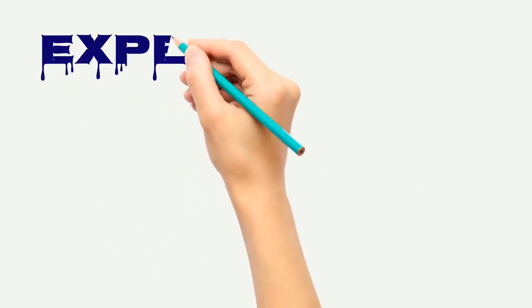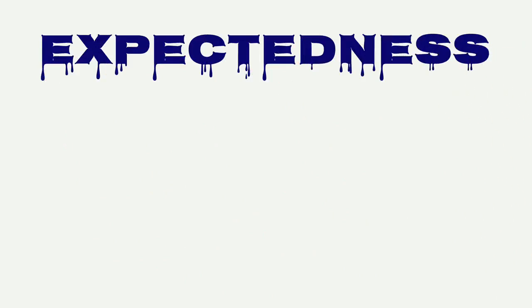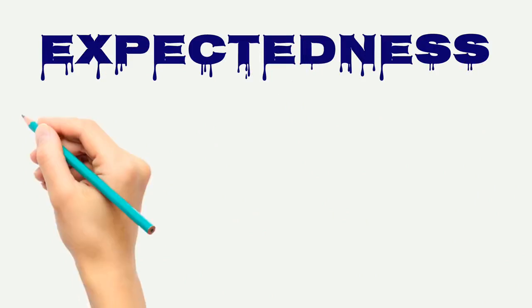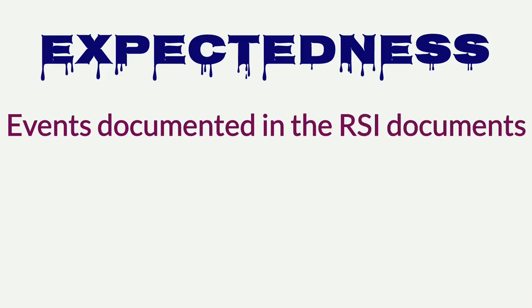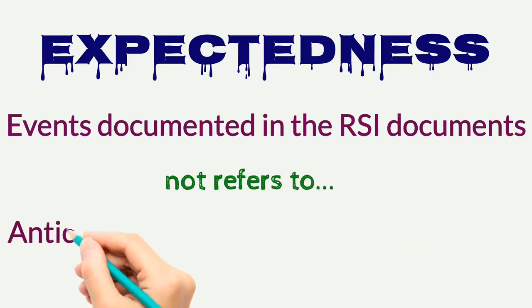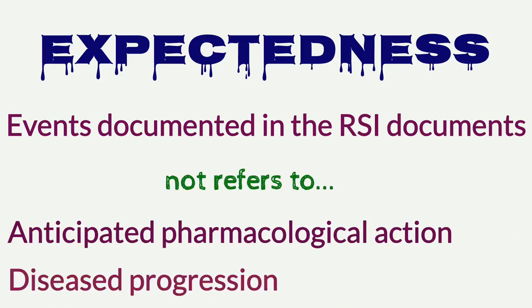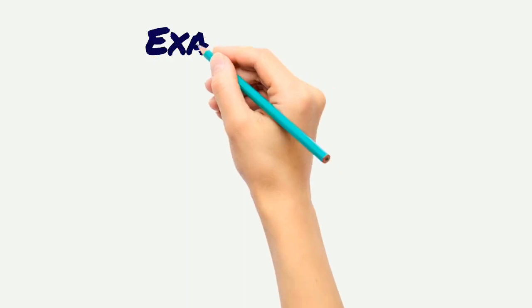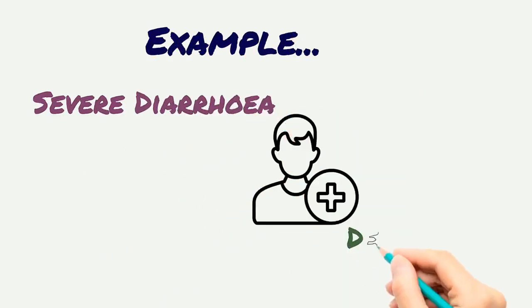Now we will see how to assess an event as expected or unexpected, labeled or unlabeled, listed or unlisted. Expectedness refers to events that have previously been observed with the use of the drug in humans and are documented in the RSI document. Expectedness does not refer to what might be anticipated from the non-pharmacological properties of the drug, nor to what may occur in the course of disease progression. For example, if severe diarrhea is in the label and a patient develops dehydration following the severe diarrhea, then dehydration would be considered unexpected unless it is in the label.